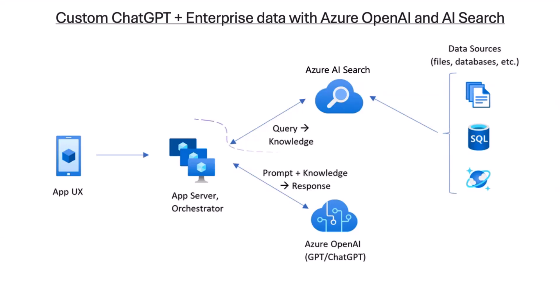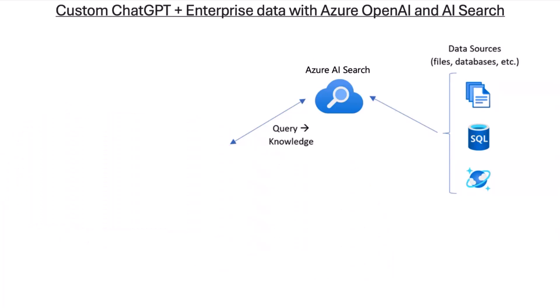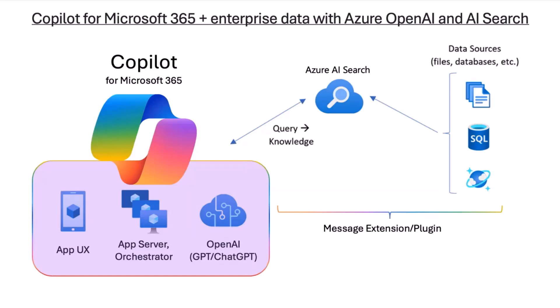In today's sample, we're tapping into something different. What if we replace this custom chat experience with Copilot for Microsoft 365, and the only thing you need to do is build your plugin and integrate it with Azure AI Search, so you can make search across your data sources available? This gives us the benefit of not needing to maintain our own generative AI app or LLM model.